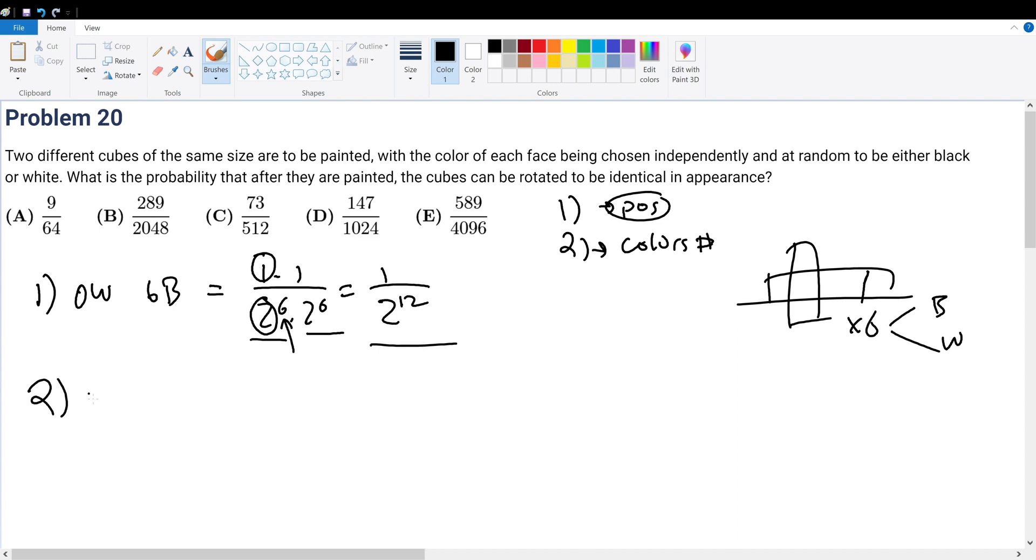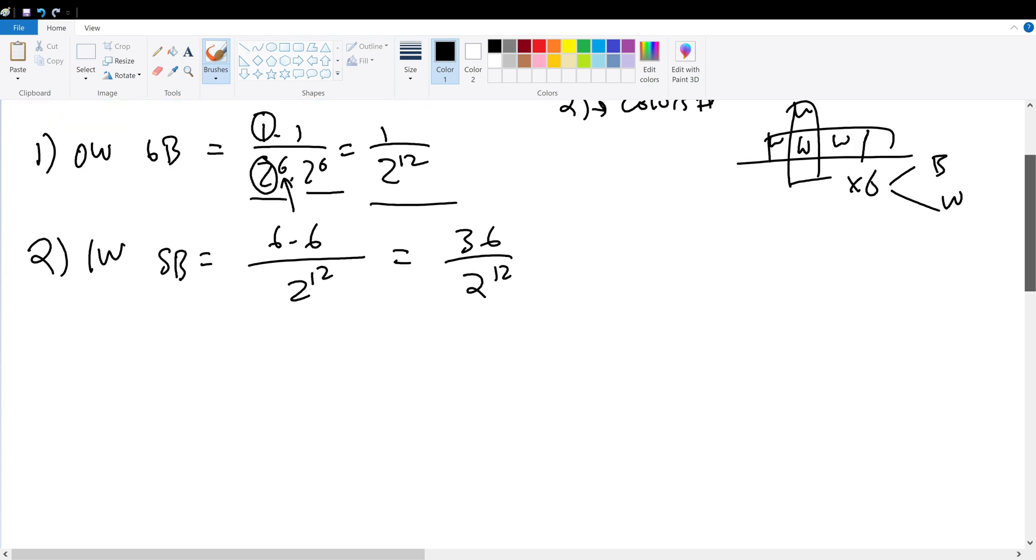Now let's consider the second case. We have one white and five black. The denominator stays the same. And what about the numerator? Well, that's 6 times 6 because if we were to choose one white, I can choose it to be on this square, or this square, this square, and so on. There's six possible faces to be painted white. So we have 6 times 6 because we have two cubes. 36 over 2^12 is our second case output.